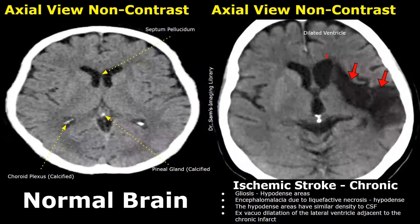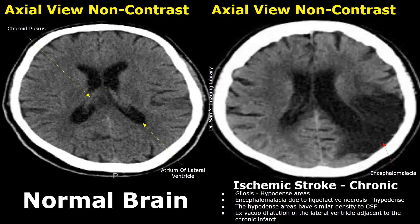Here is another case of chronic ischemic stroke. We can see a dilated lateral ventricle due to ex-vacuo dilatation of the lateral ventricle right next to the chronic infarct. There won't be any swelling at this stage. There are areas of encephalomalacia and gliosis. Usually the area of encephalomalacia is much darker than the area of gliosis. This is another case of chronic ischemic stroke — no swelling, mass effect, or midline shift is seen. There is ex-vacuo dilatation of the lateral ventricle right next to the chronic infarct, and also encephalomalacia and gliosis.